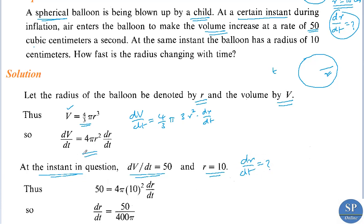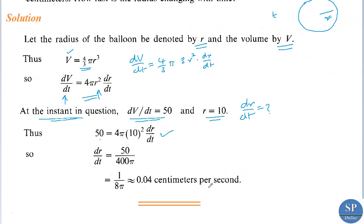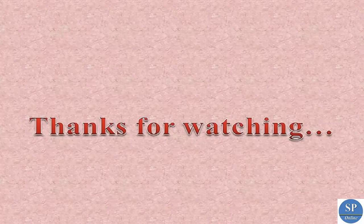Substituting the values, 50 equals 4 pi into 10 squared into dr by dt. So dr by dt equals 50 divided by 4 pi into 100, that is 1 by 8 pi, which is approximately equal to 0.04 centimeters per second. Therefore the radius is changing at a rate of approximately 0.04 centimeters per second. Thank you.